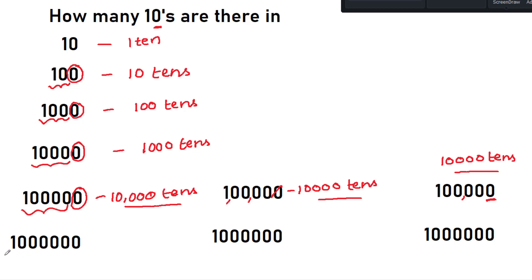Now see this example — a large number without commas. Even if you don't know what number it is, in order to find how many tens are there, you just leave the last zero and count what is the number before that — it has 5 zeros remaining, so it is 100,000 tens. Instead of the last zero, you write 'tens' — you will have that many tens. Depending on the number system, if you are writing in Indian number system, you write 1,000,000 tens; if in international number system, you write 100,000 tens.